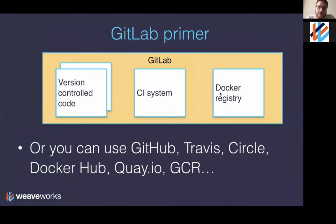I'm going to use GitLab in this example because it conveniently bundles up version control, CI, and a Docker registry in one product. But you can apply everything I show you today to any other CI system, Docker registry, or version control system — GitHub, Travis, Circle, etc. Nothing I'm showing is specific to any one of those systems.